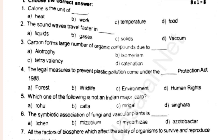Which one of the following is not an Indian major crop? The symbolic association of fungi under vascular plants is ___. All the factors of biosphere which affect the ability of an organism to survive and reproduce are called as ___.